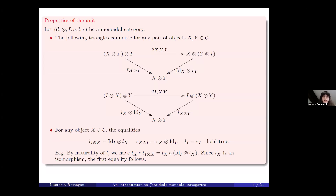A monoidal category is called strict when all the constraints A, L, R are identities. From the previous axioms, one can show that given a monoidal category C, the following triangles are also commutative, where we have the unit object on the third tensorand and as the first tensorand. Moreover, for any object X in C, the following equality holds. To see the first one, we know that L is natural, so we have this equality, and since L is invertible, the first equality follows. Similarly one can show the second, and for the third, this follows by the previous triangle using the triangle axioms and the invertibility and naturality of the left constraint.